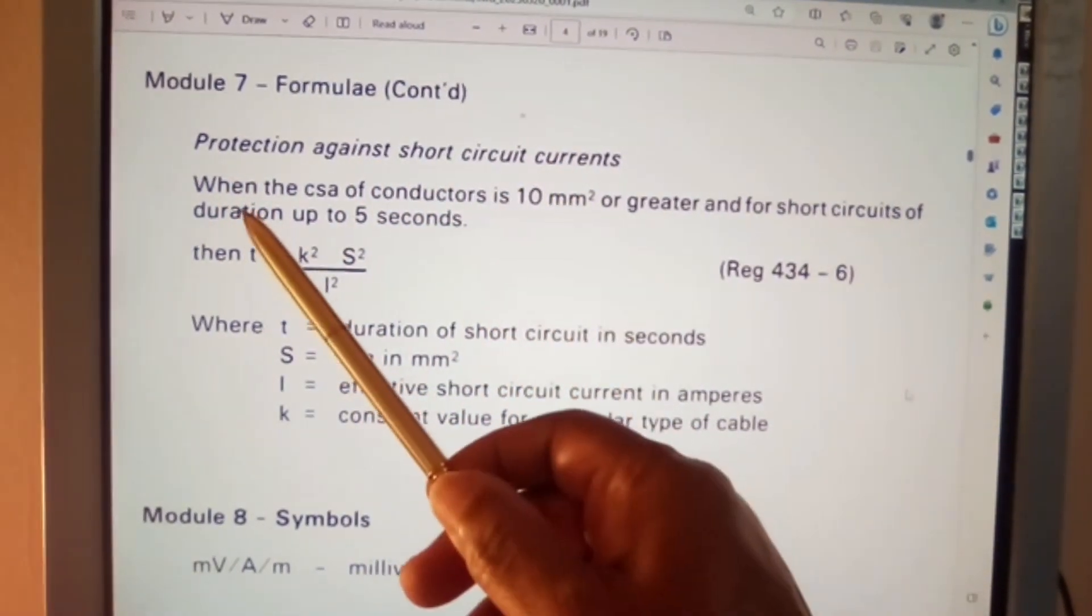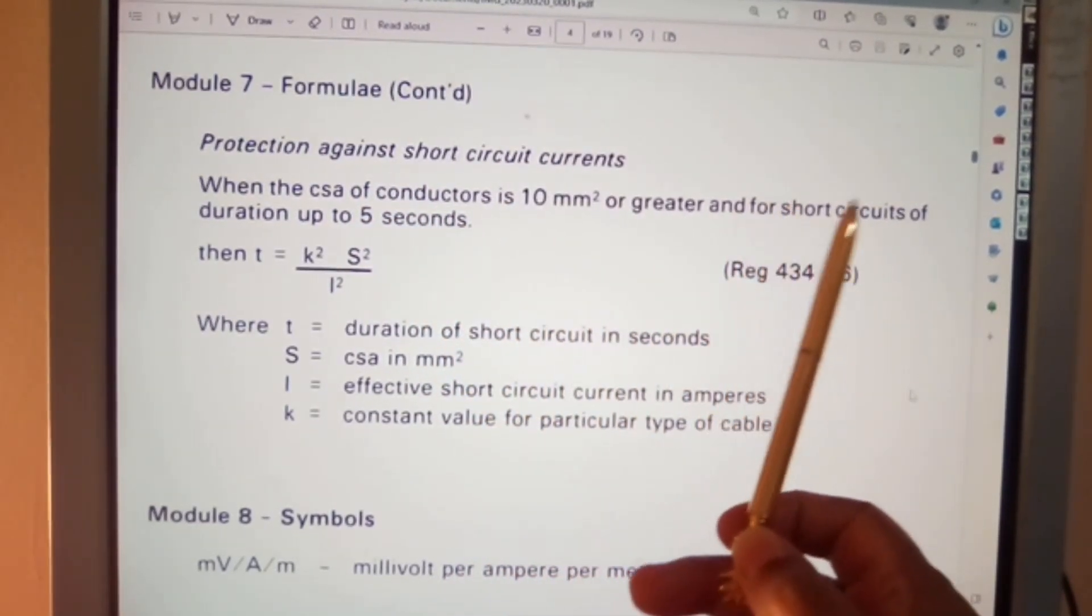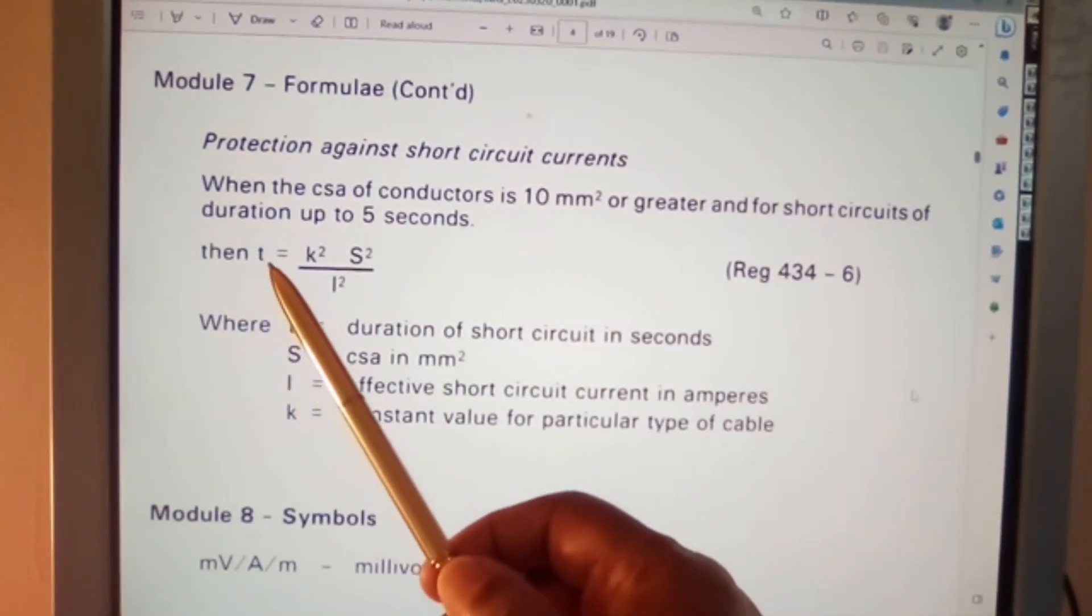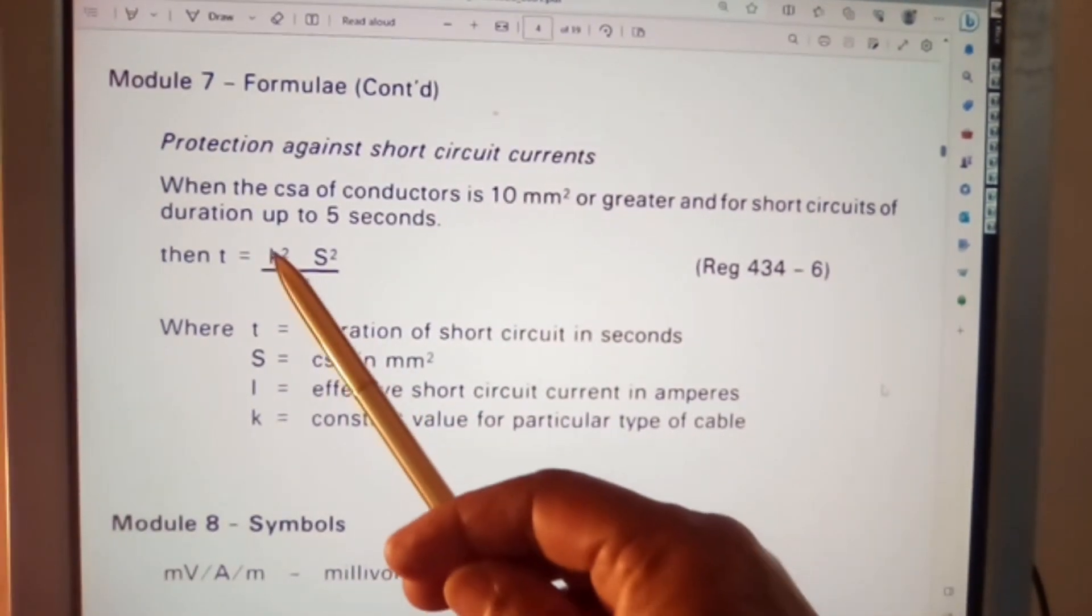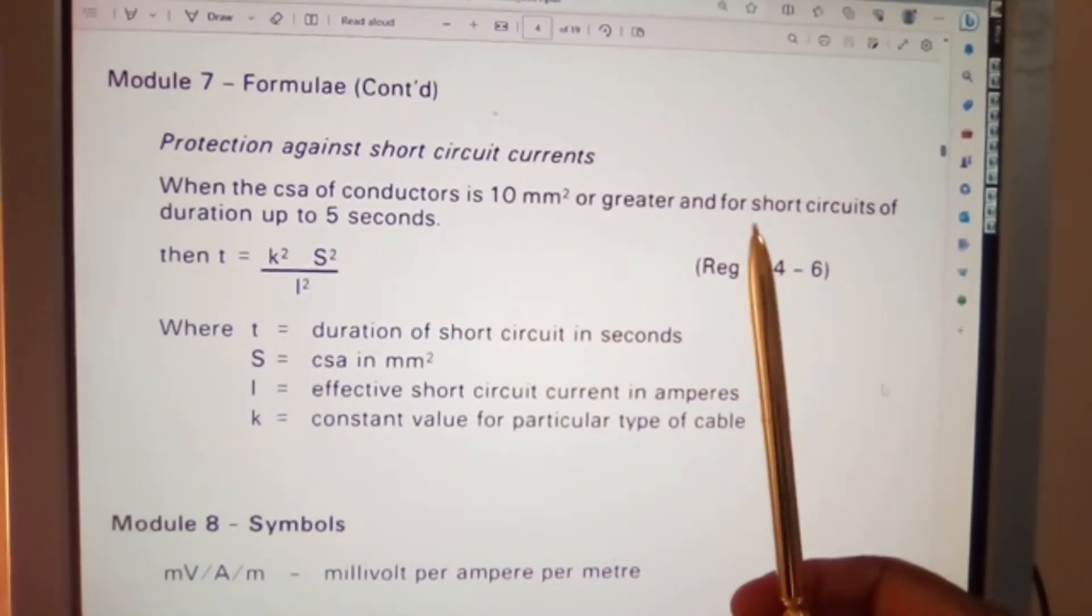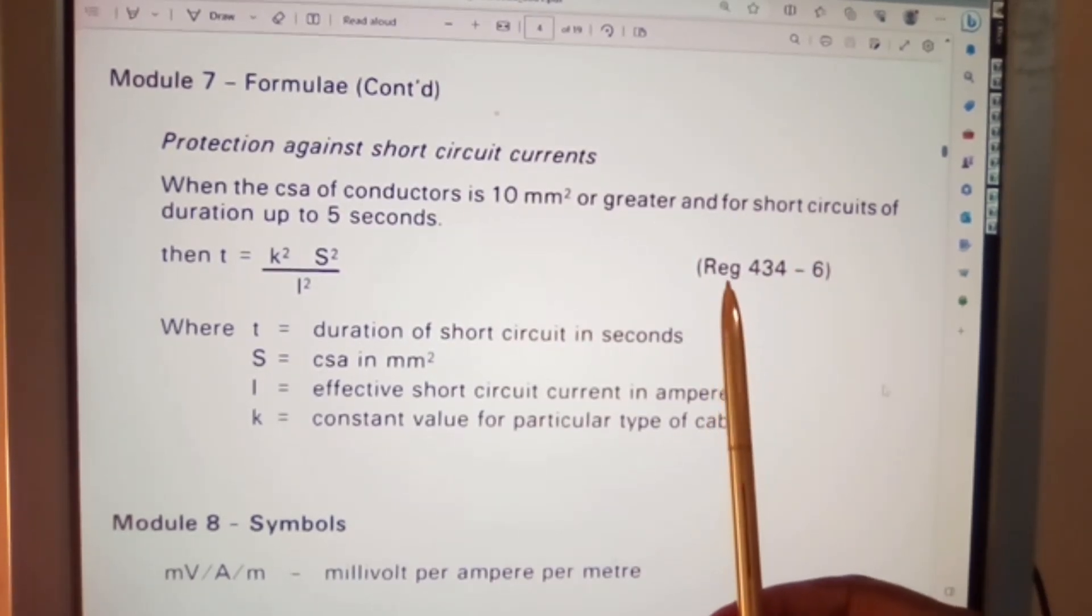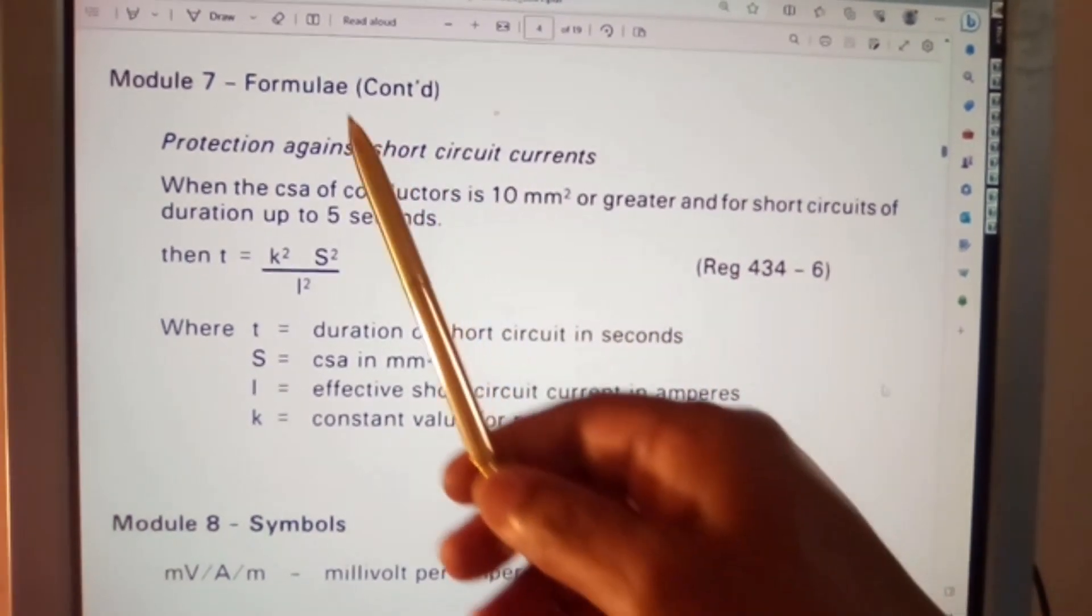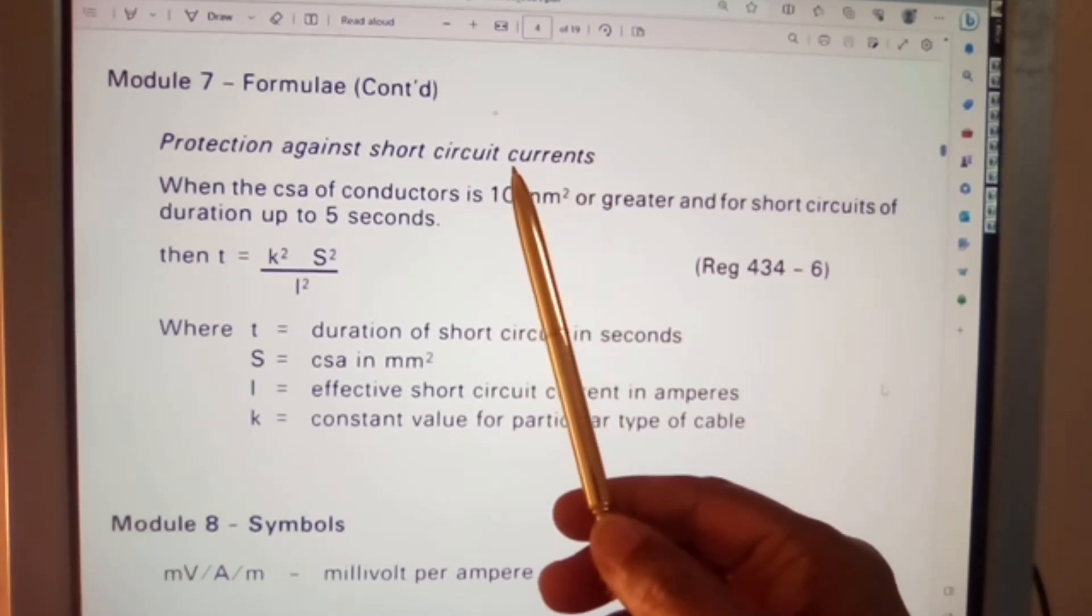Protection against short circuit current. When the CSA cross-section area of conductors is 10 millimeters square or greater and for short circuits of duration up to five seconds, then T equals K squared times S squared over I squared. Now don't take in regulations 434, section 6. Be aware that this may have changed in the new edition of the IEE regulations, so be aware of this. Don't assume the number to be the same here. You will need to read and look it up for yourself and check in regards to protection against short circuit currents. And use the current index of the IEE regulations to find your headings.